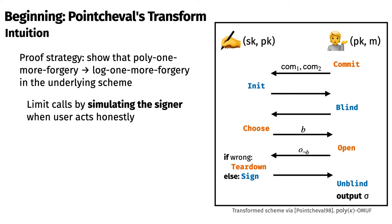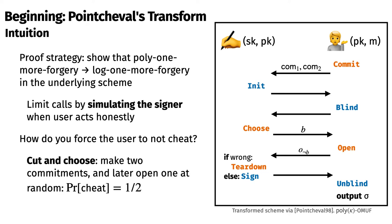The way to check honest computation is by having the user make two commitments and open one of them. Thus, a cheating user gets caught with probability one-half each session.